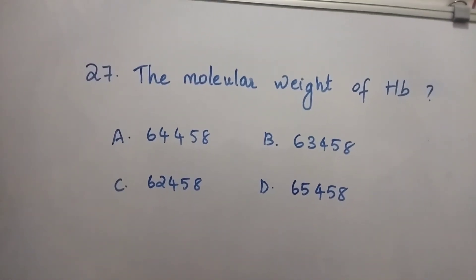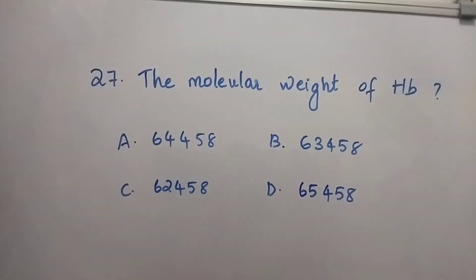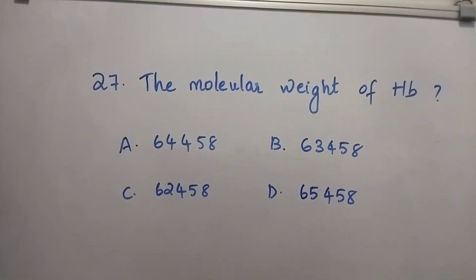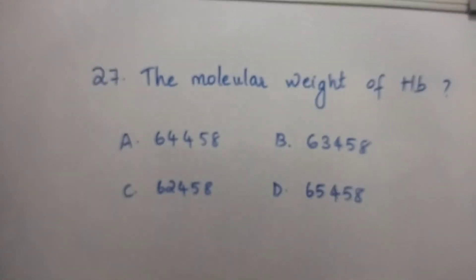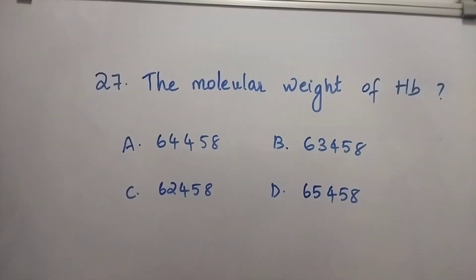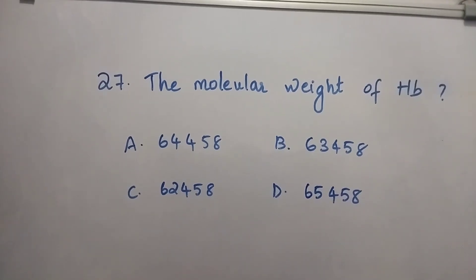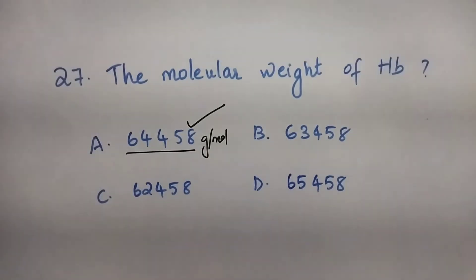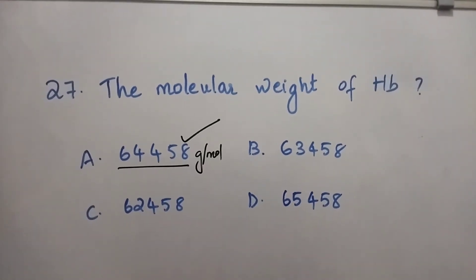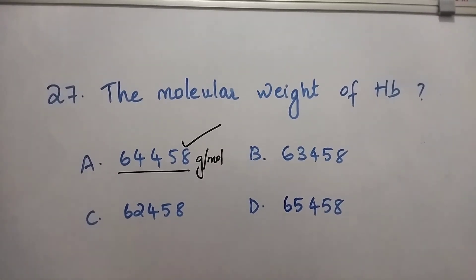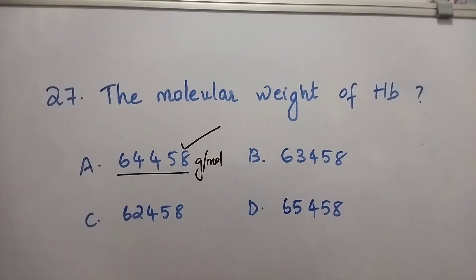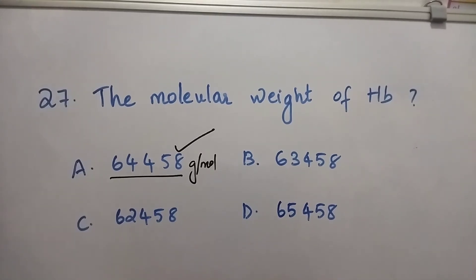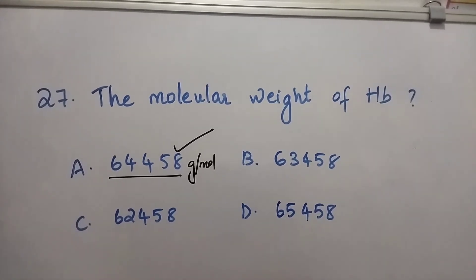Question number 27: The molecular weight of hemoglobin — Option A: 64,458. Option B: 63,458. Option C: 62,458. Option D: 65,458. The right answer is Option A, 64,458 grams per mole. The molecular weight of hemoglobin is 64,458 g/mol.